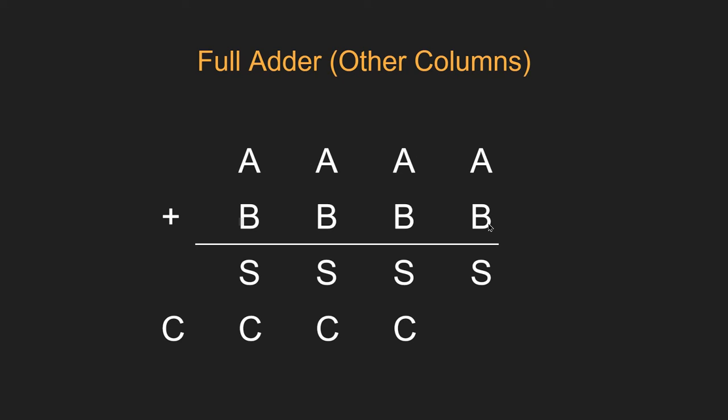All of the B inputs, which is all the second binary bits that we're going to add together. And then in each case, we're going to have a sum and a carry out, starting from the right and working through to the left.